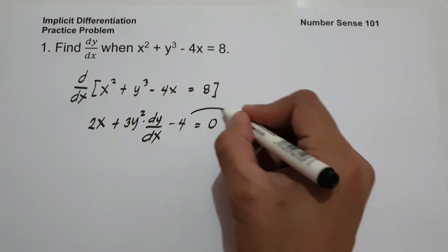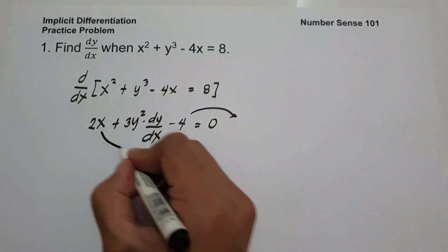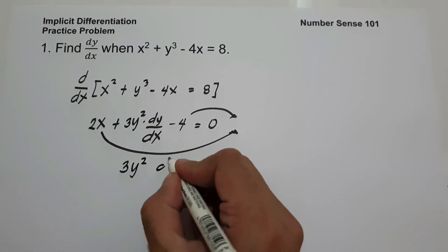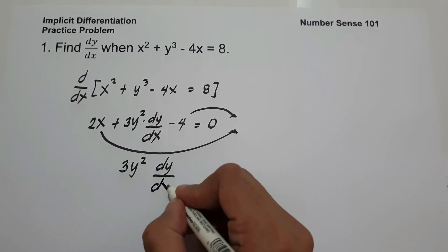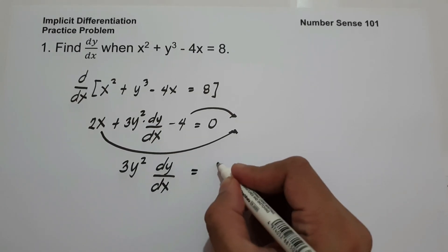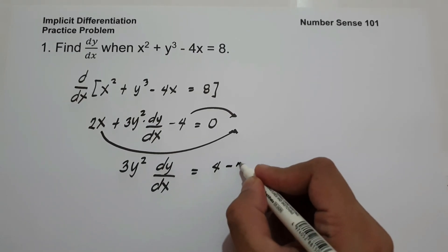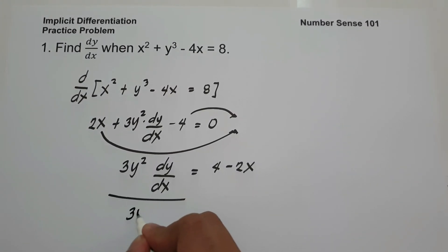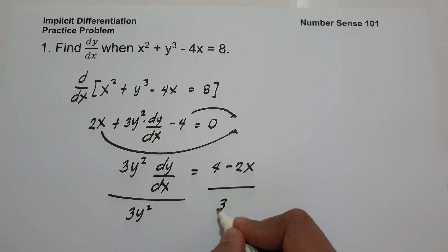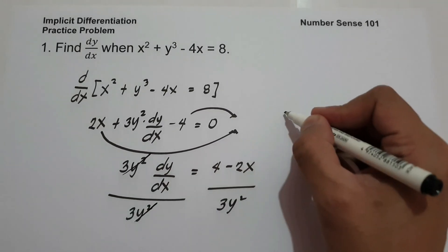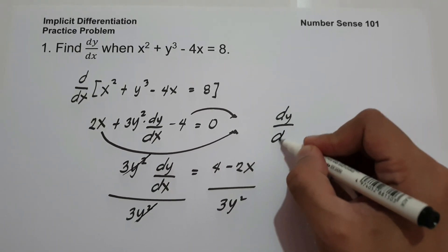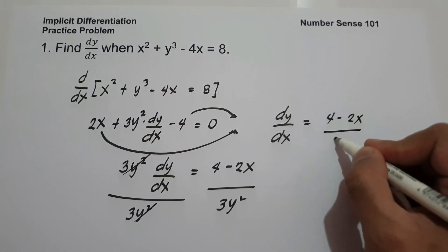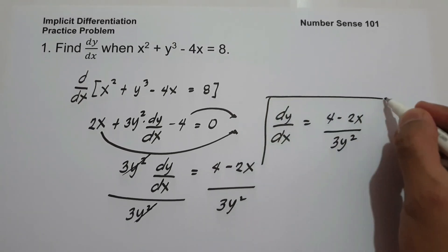So let us move negative 4 to the other side of the equation together with 2x. It will give us 3y squared times dy over dx equals 4 minus 2x. Then let us divide both sides by 3y squared. So the value of dy over dx is 4 minus 2x, all over 3y squared. And this will be our answer.